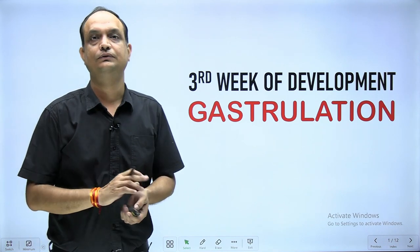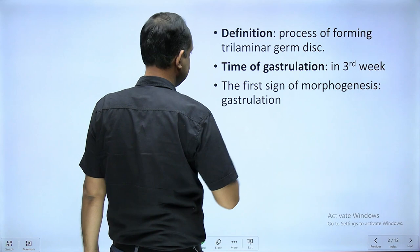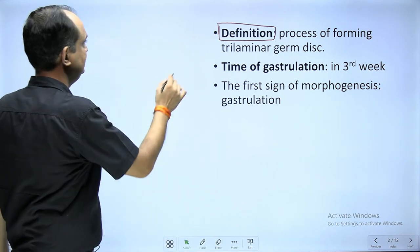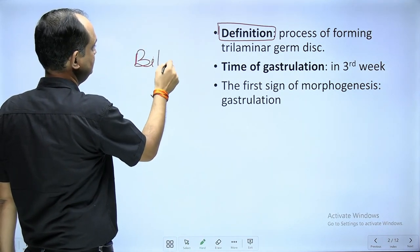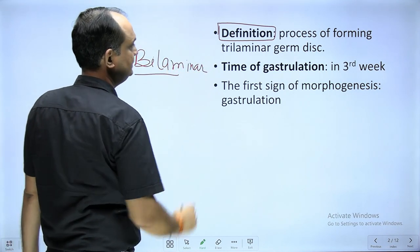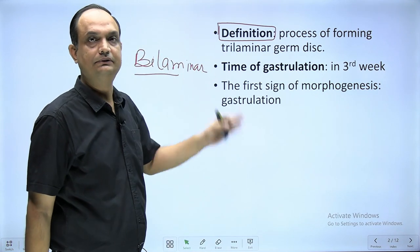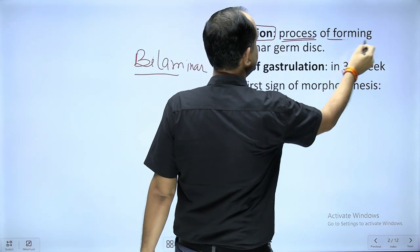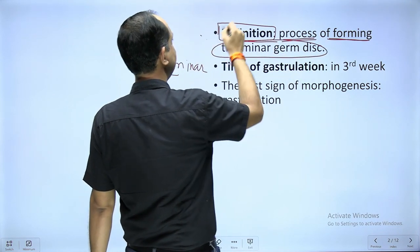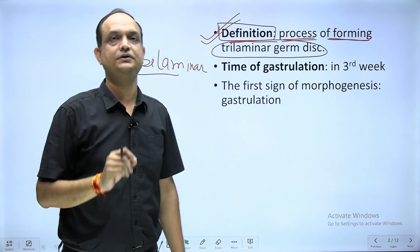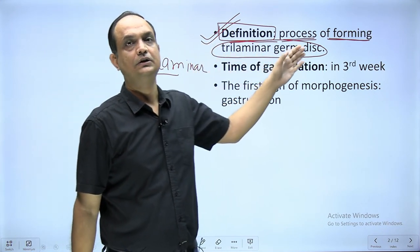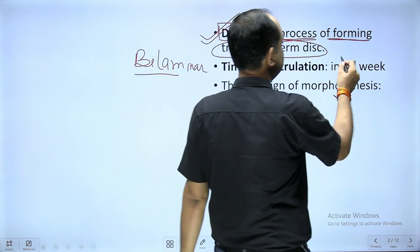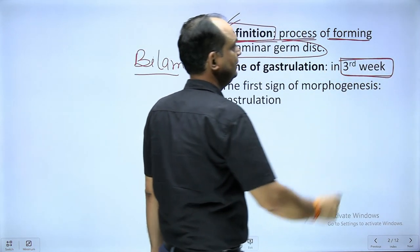As usual, the first line always starts with the definition. So what is gastrulation? When you see the second week of changes in the embryo, there is a formation of bi-laminar germ disc, having the epiblast and hypoblast layer. Now in the third week, there is a formation of tri-laminar germ disc. So gastrulation is a process by which you have a tri-laminar germ disc. Gastrulation takes place in the third week of intrauterine life after fertilization.